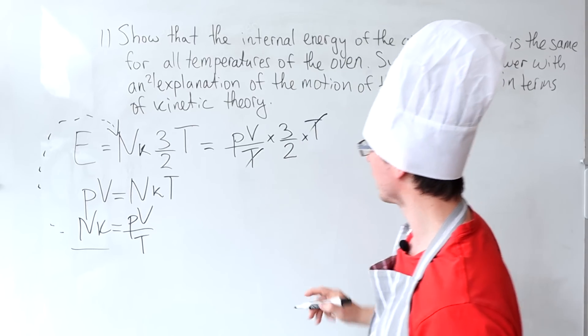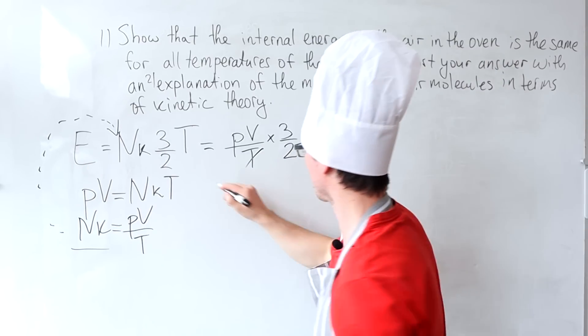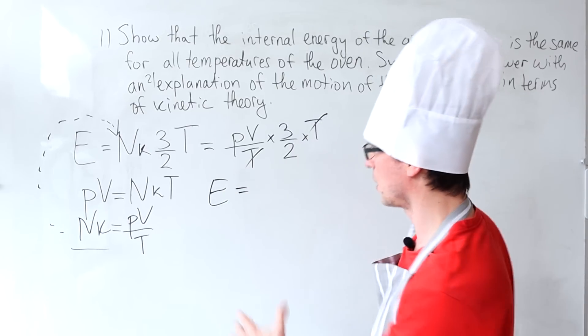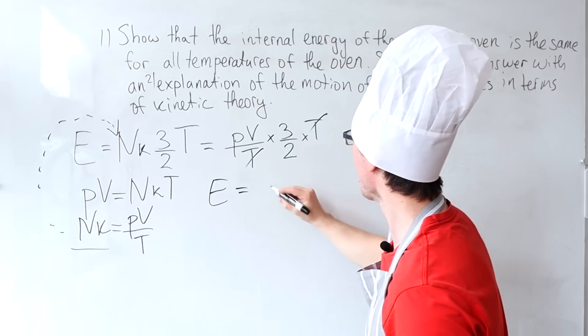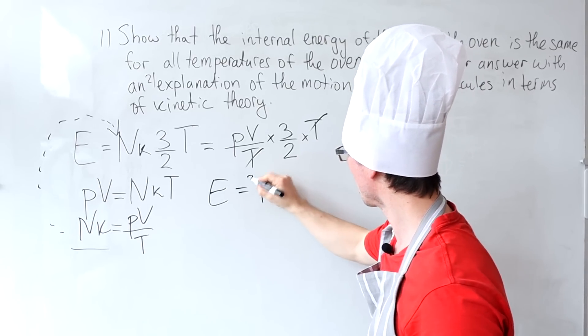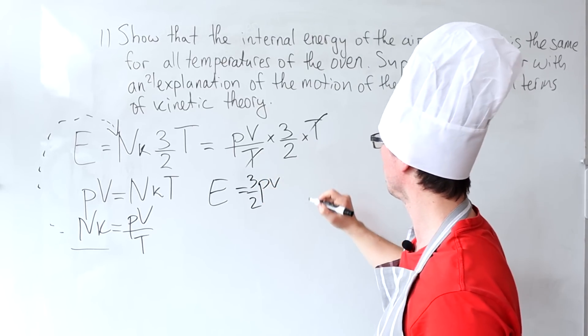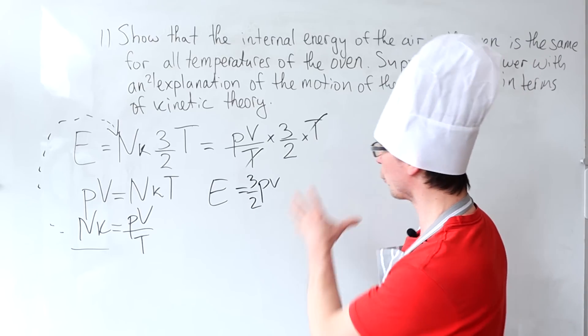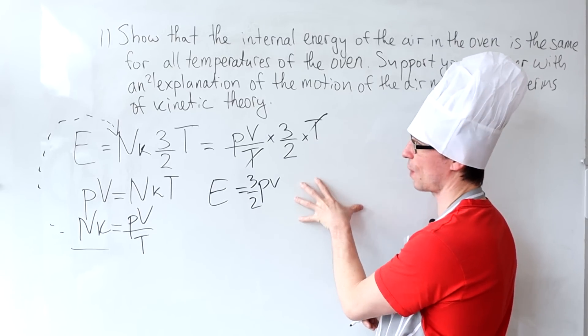And look at this, the T's are going to cancel. And what I get, I'm going to rewrite this over here, that the internal energy, call it E, will be equal to PV times 3 over 2. And that's it. So this is independent of the temperature.